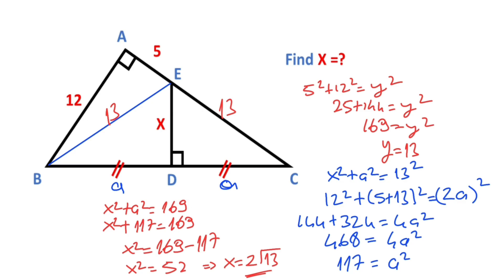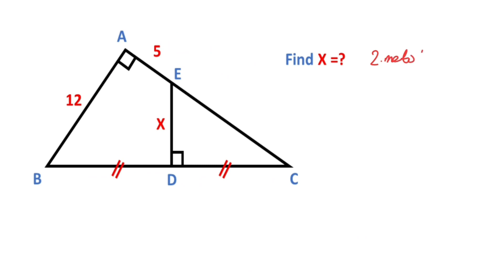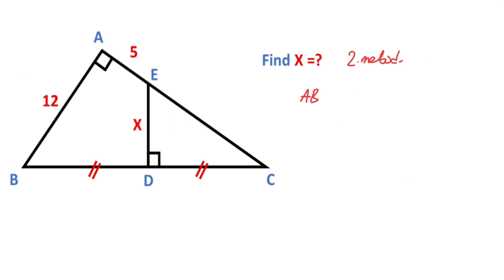This is the first method. Now we calculate the value of x using second method. First of all, notice that sum of these two opposite angles equals 180 degrees. That means this quadrilateral is a cyclic quadrilateral. So ABDE is a cyclic quadrilateral.